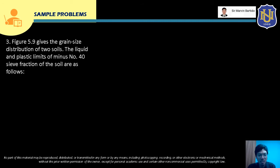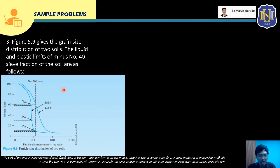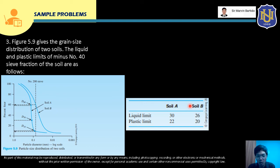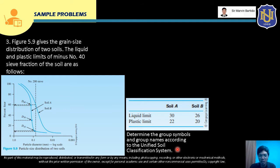For Sample Problem 3: Figure 5.9 gives the grain size distribution of two soils — Soil A and Soil B. The liquid and plastic limits of the minus No. 40 fraction are given for each soil. We need to determine the group symbols and group names according to the USCS for both soils.